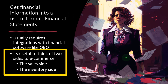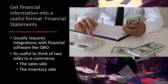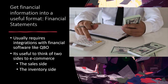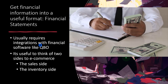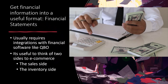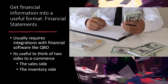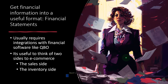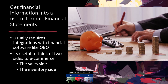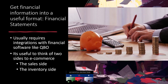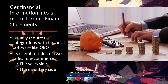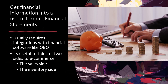When thinking about pulling information into QuickBooks Online, it's useful to think about two main buckets and keep them separate. One bucket is the sales side — the revenue side of transactions. The other bucket involves transactions related to tracking inventory and cost of goods sold. In a perpetual inventory system, when you sell inventory, revenue goes up, cash or accounts receivable goes up, inventory goes down, and cost of goods sold goes up — all at the same time.